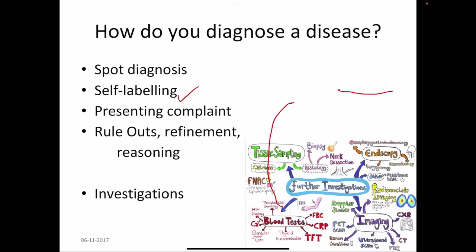Then we have investigations. Various types of investigations can be broadly classified into tissue sampling or histopathologies, biochemical investigations, imaging investigations, endoscopy, and we have plenty of these investigations which will help in the diagnosis of the disease.